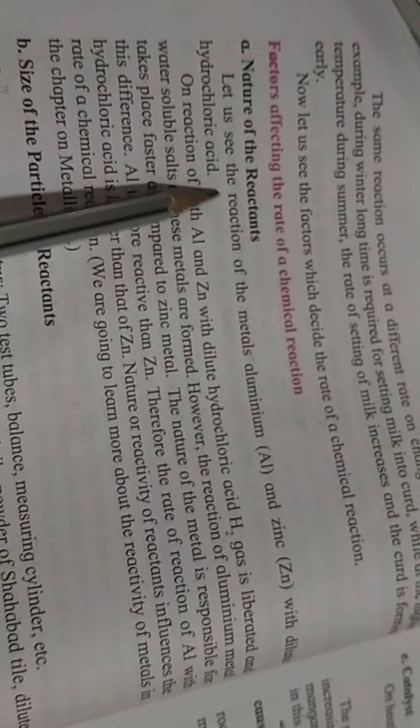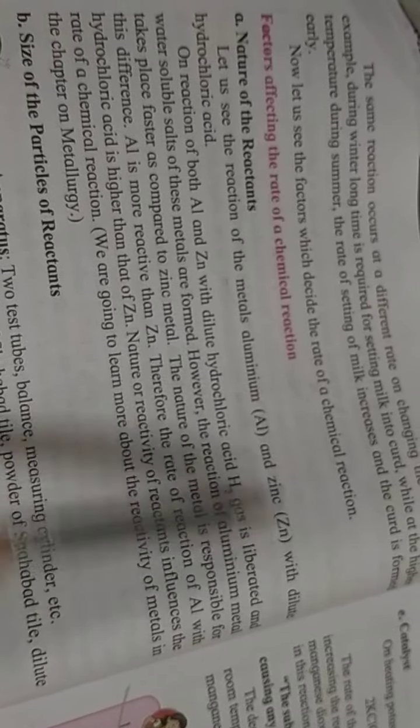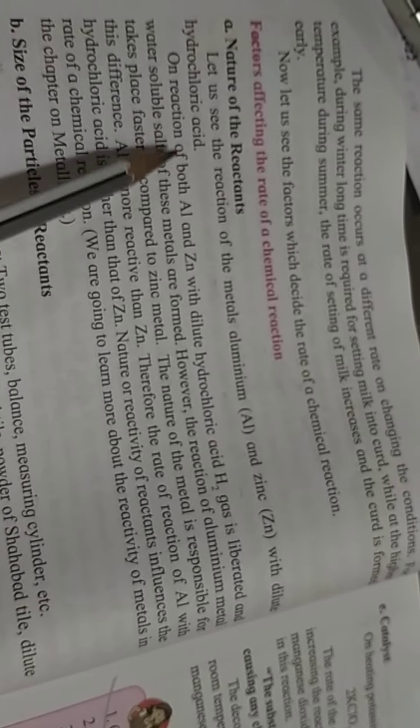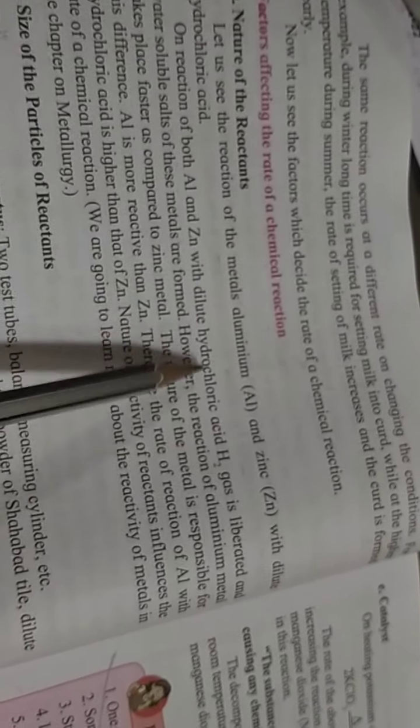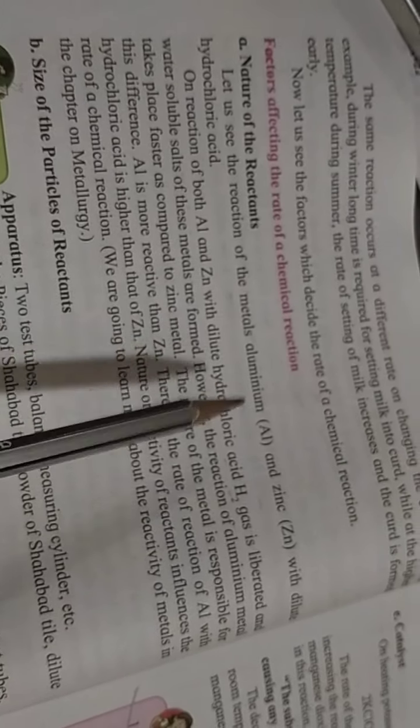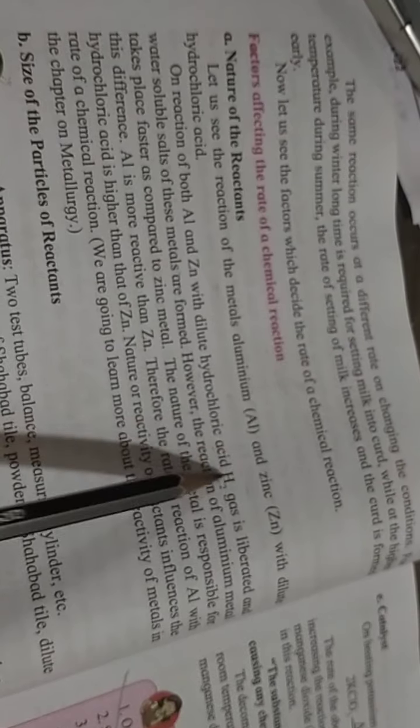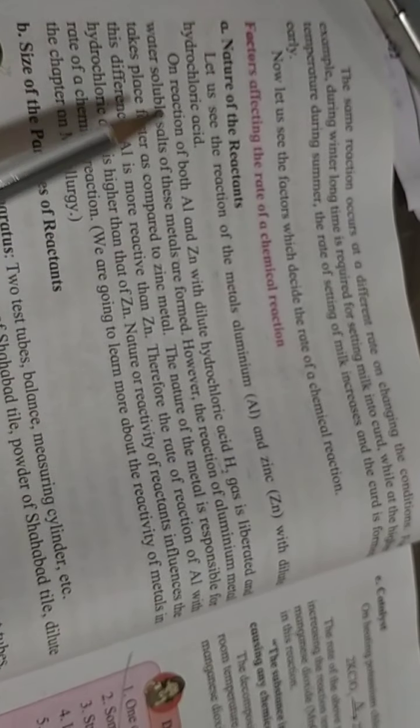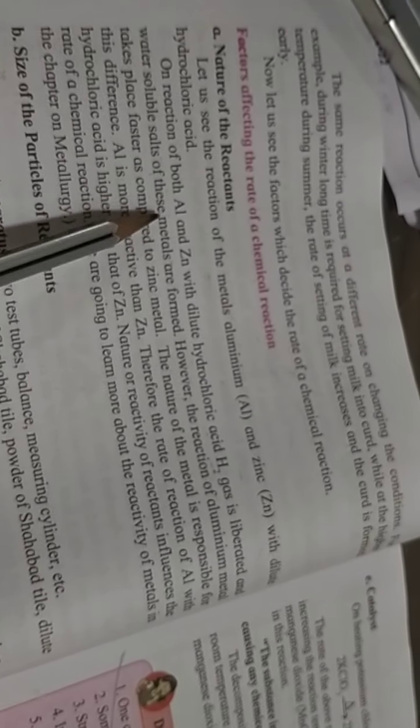Let us see the reaction of metal, aluminium and zinc with dilute hydrochloric acid. On the action of both aluminium and zinc with dilute hydrochloric acid, hydrogen gas is liberated and water-soluble salts of these metals are formed. Meaning aluminium and zinc with hydrochloric acid react to produce hydrogen gas and water-soluble salts.